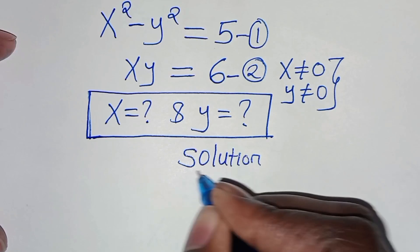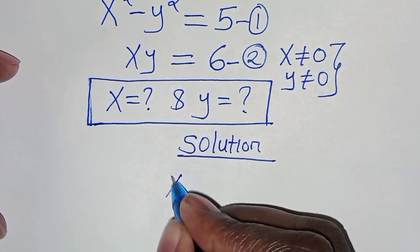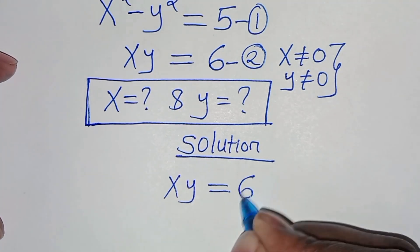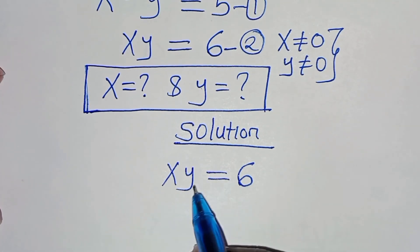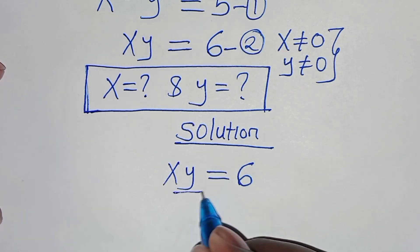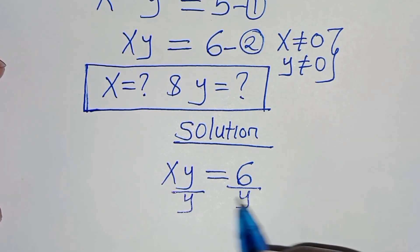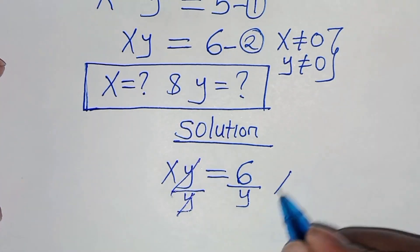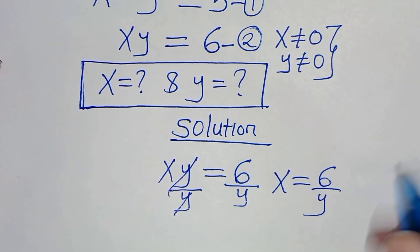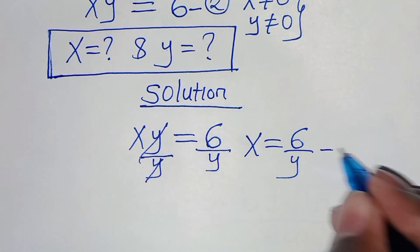The first step here: from equation 2, which is x times y equals 6, let's make x the subject of the formula by dividing by y on both sides, so that x is equal to 6 over y. Let's call this equation 3.